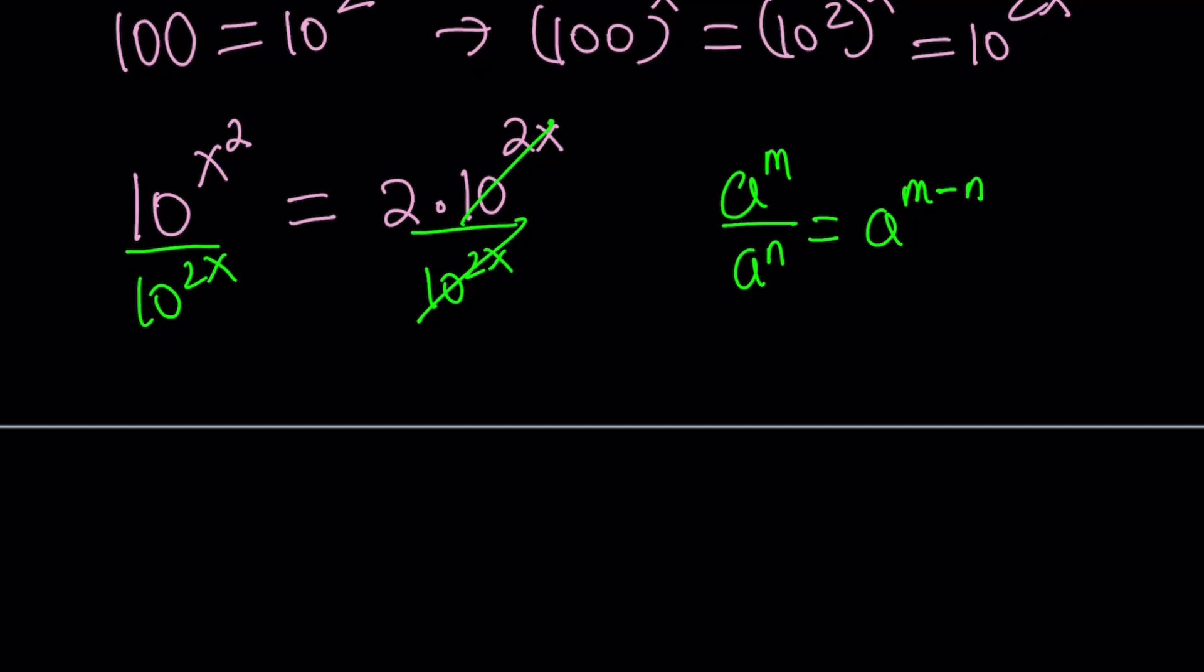So now from here we're going to get 10 to the power x squared minus 2x equals 2. This is the critical part. What do we do to bring down the exponent? If you said log both sides you're right.